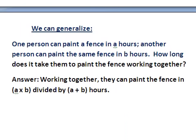If one person can paint the fence in A hours, and another person can paint the fence in B hours, then together they can paint the fence in A times B divided by A plus B hours.